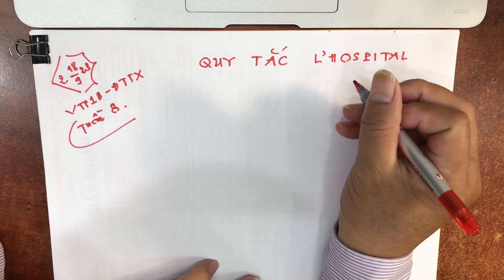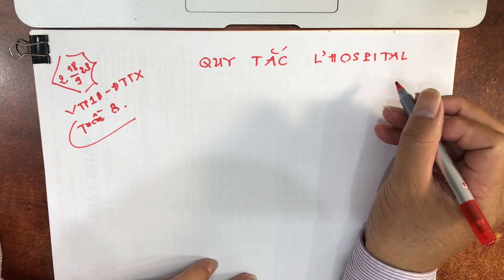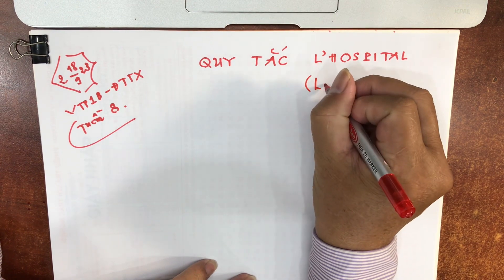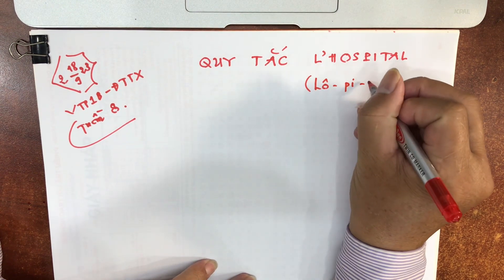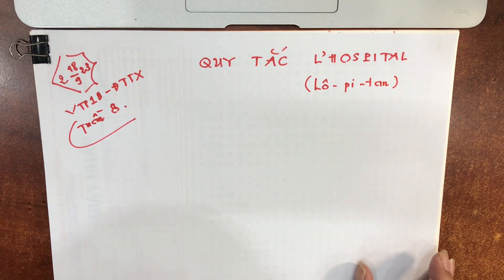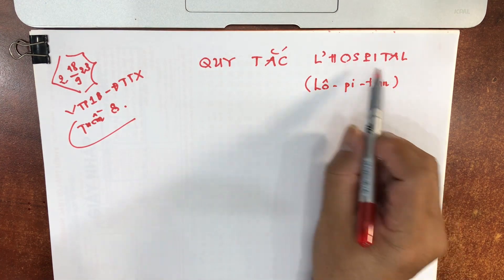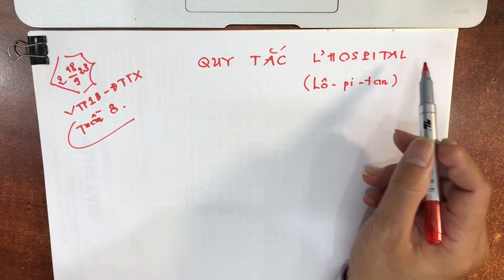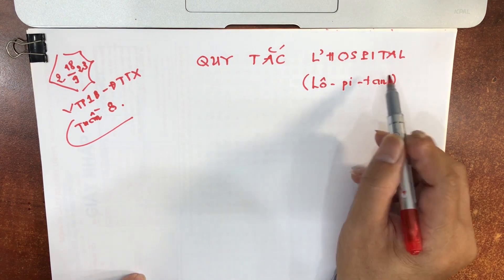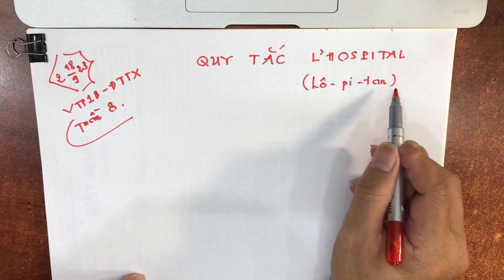Cái tên như thế này, nhưng mà ông này là một nhà toán học người Pháp. Phiên âm ra tiếng Việt thì mình nói tiếng Việt là Lobitan, chứ mình không đọc theo kiểu tiếng Anh. Các giáo trình toán tiếng Việt thì họ phiên âm cái tên của nhà toán học này là Lobitan.